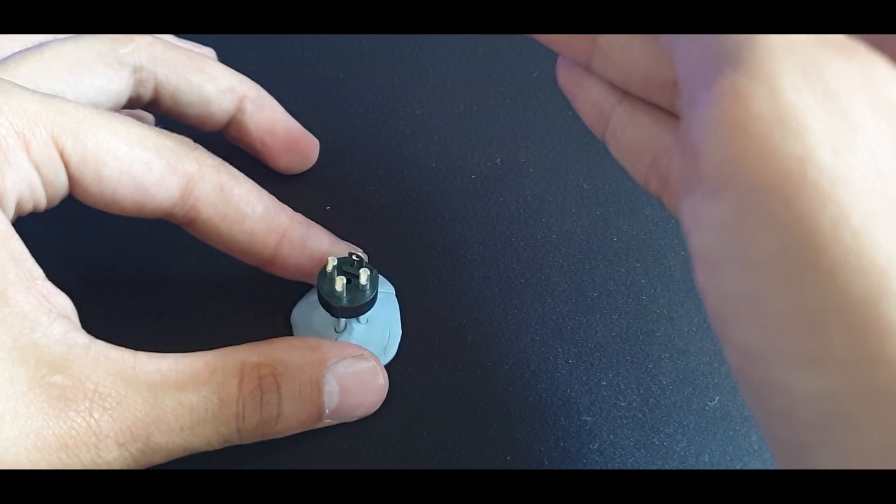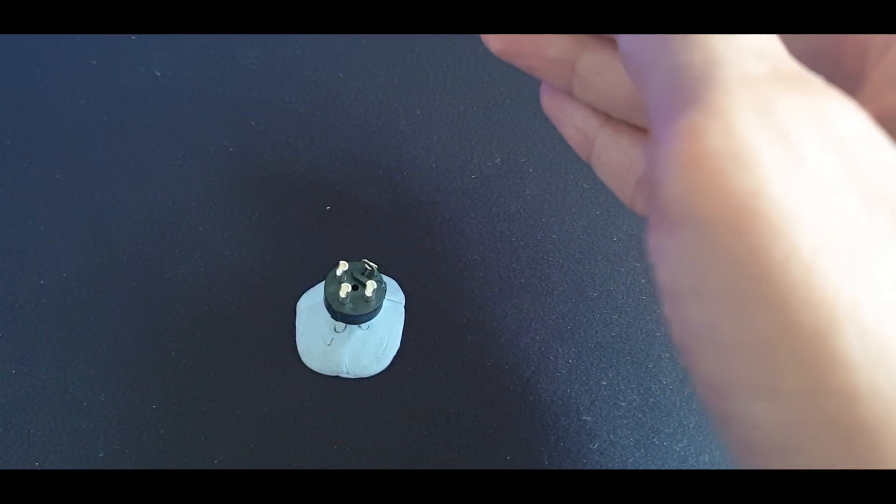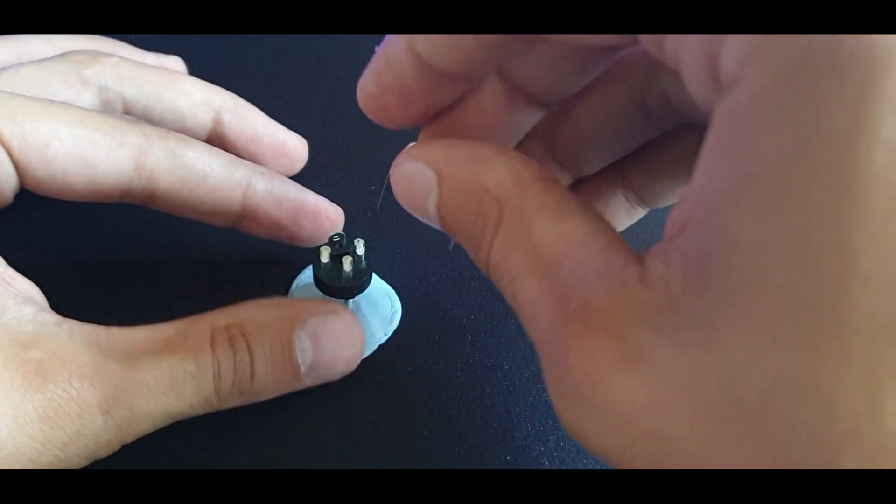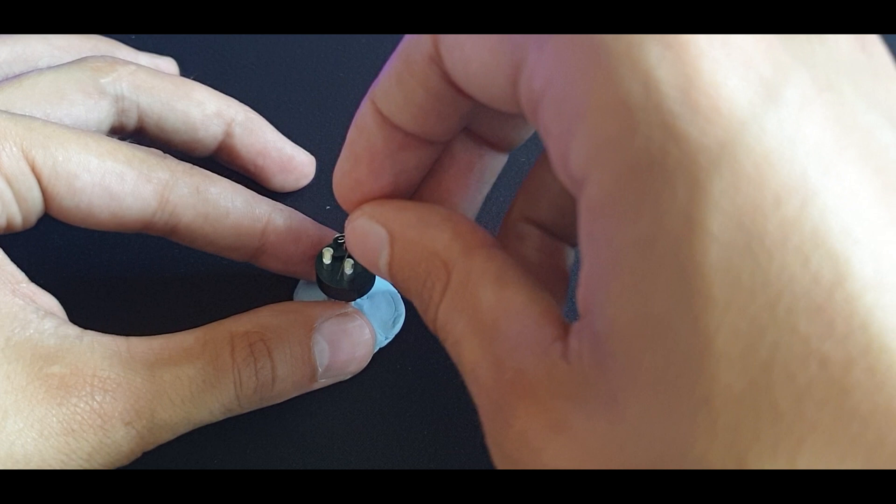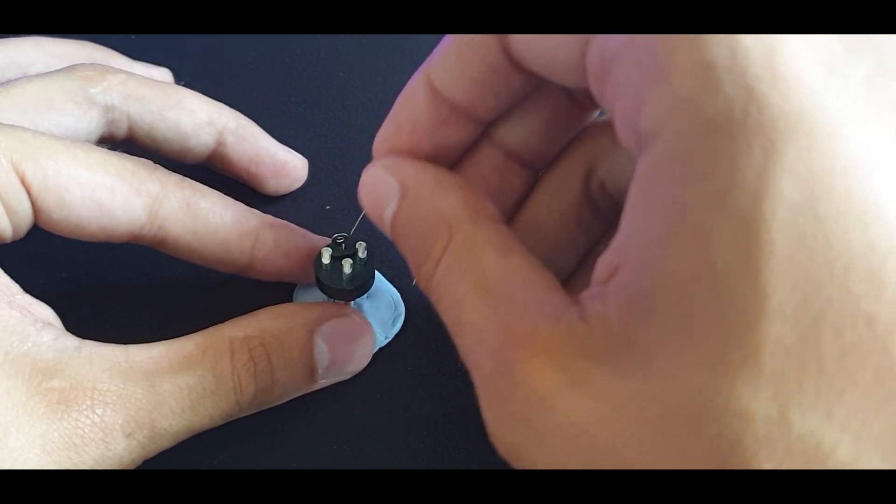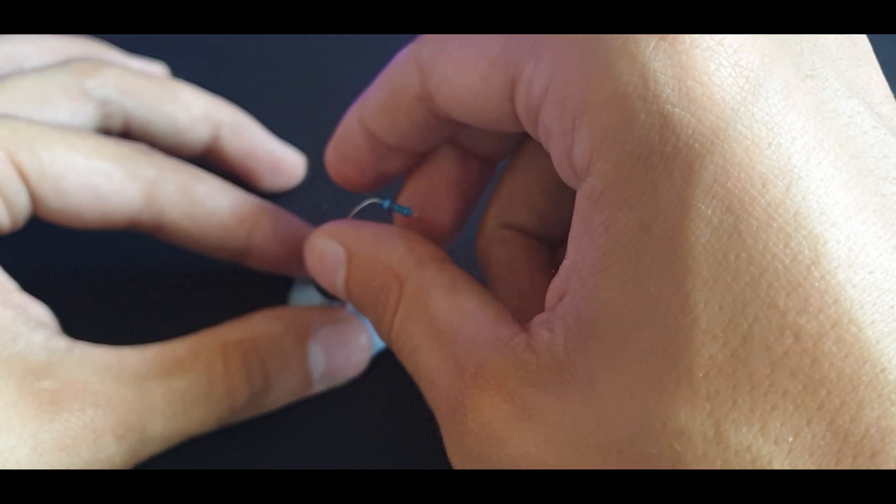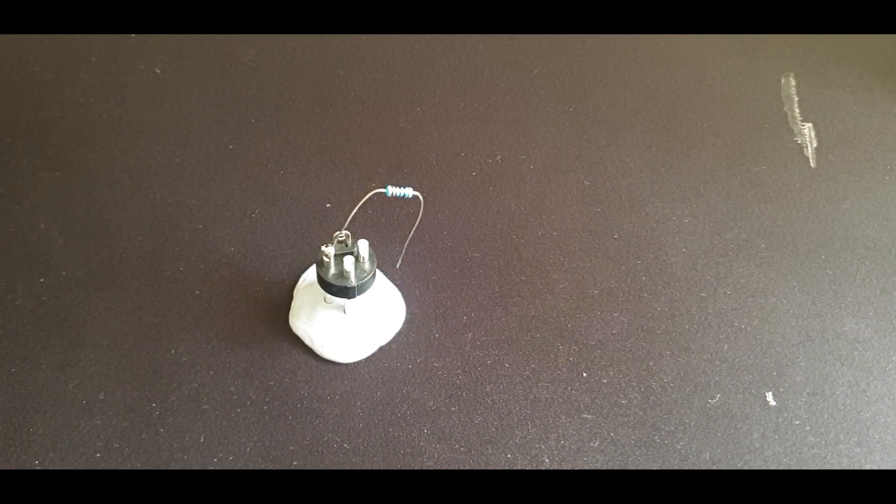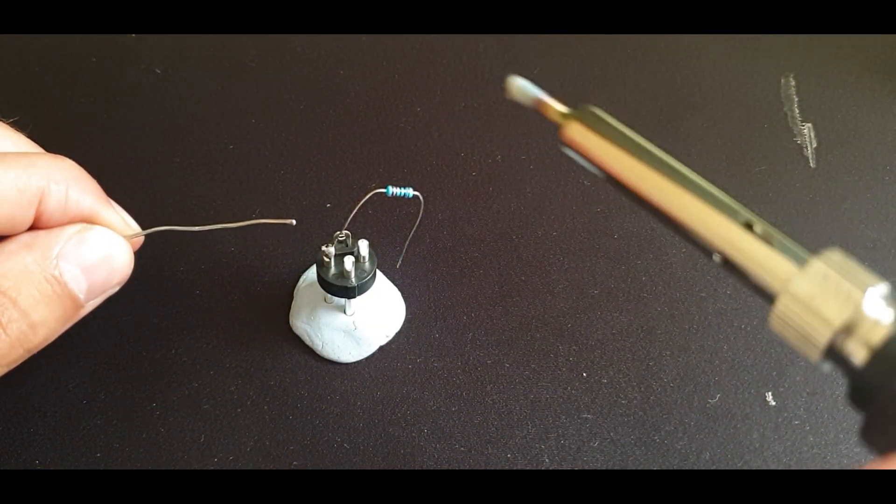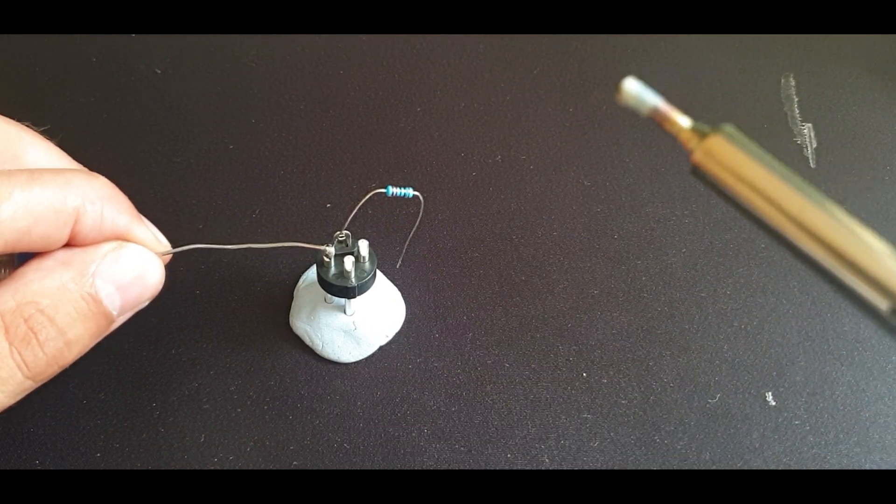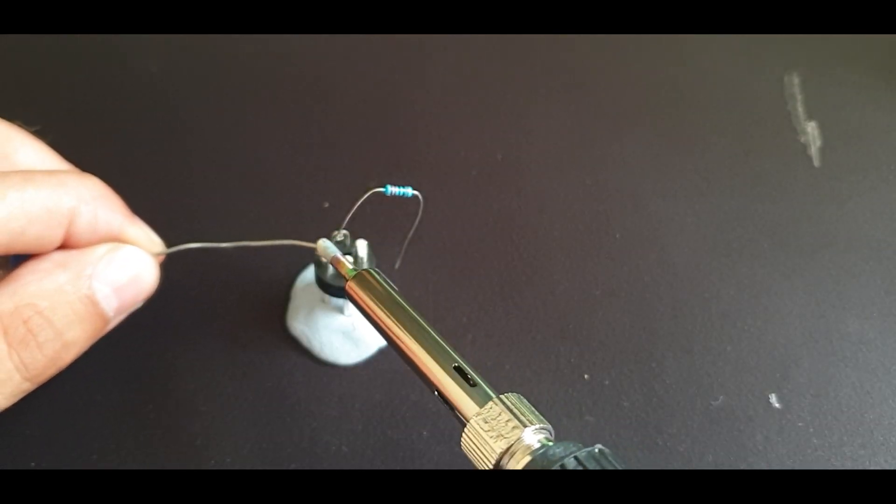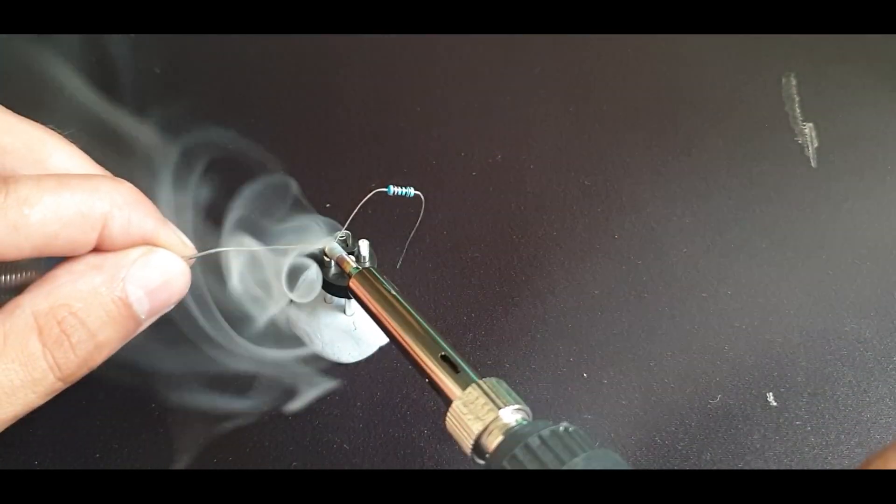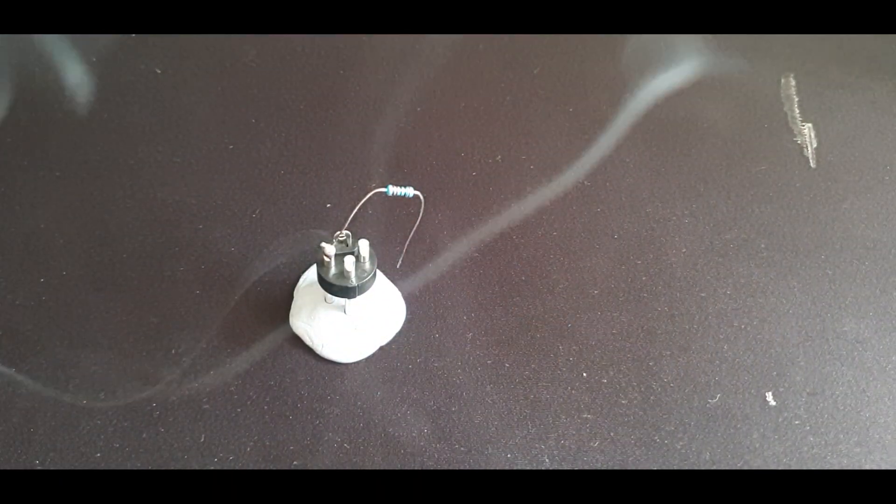So what we're going to do is stick one of the ends into pin number two like so, and that should just balance like that. Once that's in, we're going to get the solder and the soldering iron and solder this in.